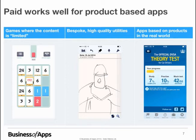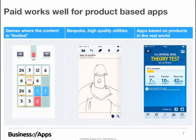The paid model can also work very well for bespoke, high-quality utilities. For example, the app Notability offers a really complete and comprehensive feature set with a premium experience. By doing that, it can justify charging upfront rather than making it free and hoping users pay for extra tools. It has a very clear purpose — filling the handwritten note-taking need for iPad and iPhone users on the go — and that justifies a paid price.